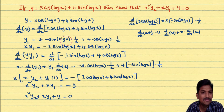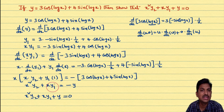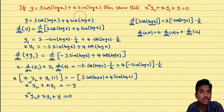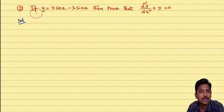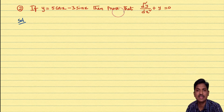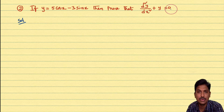It's a very simple procedure. You only need to know all the derivative formulas and chain rule differentiation to do this problem. Now we will understand second-order derivatives with one more problem: if y = 5cos x - 3sin x, then prove that d²y/dx² + y = 0. Here d²y/dx² means second-order derivative.